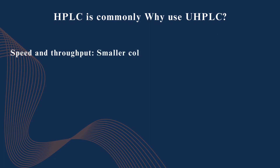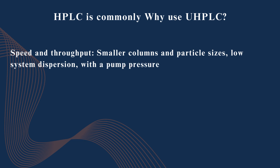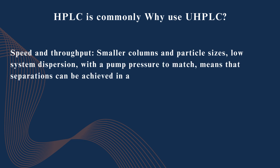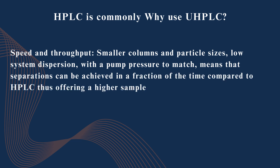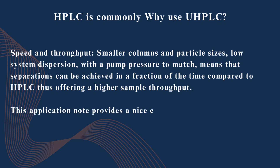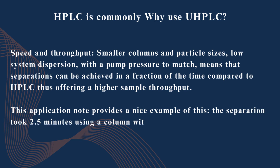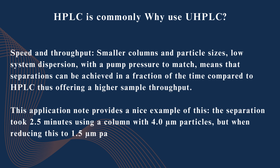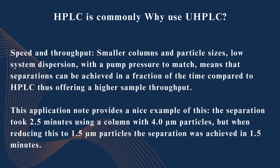Speed and throughput. Smaller columns and particle sizes, low system dispersion, with a pump pressure to match, means that separations can be achieved in a fraction of the time compared to HPLC, thus offering a higher sample throughput. This application note provides a nice example: the separation took 2.5 minutes using a column with 4.0 micron particles, but when reducing this to 1.5 micron particles, the separation was achieved in 1.5 minutes.